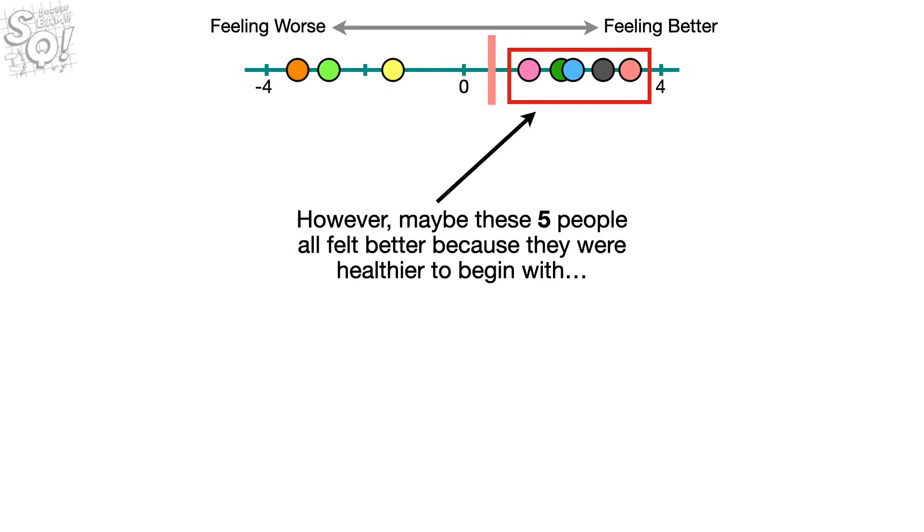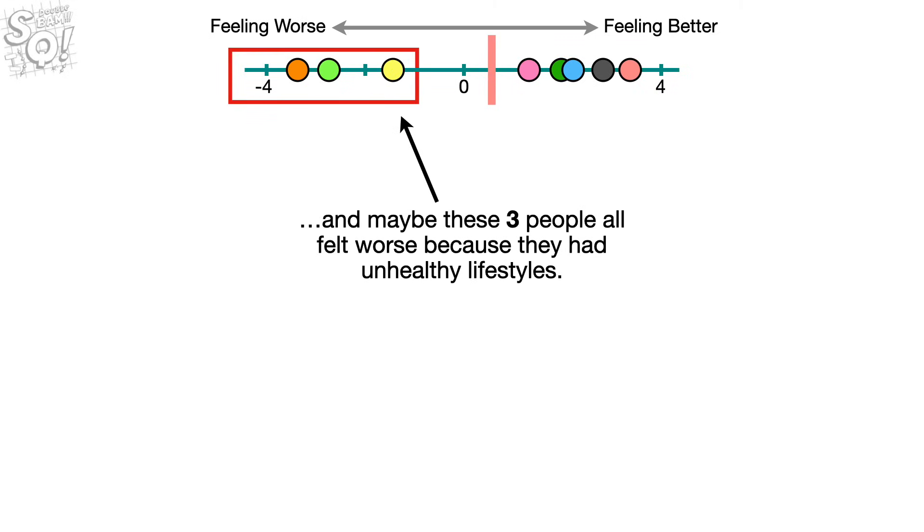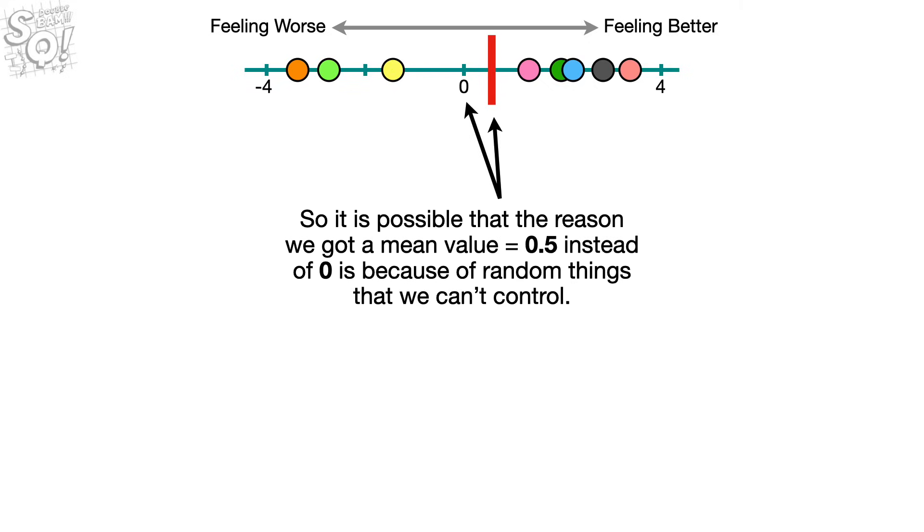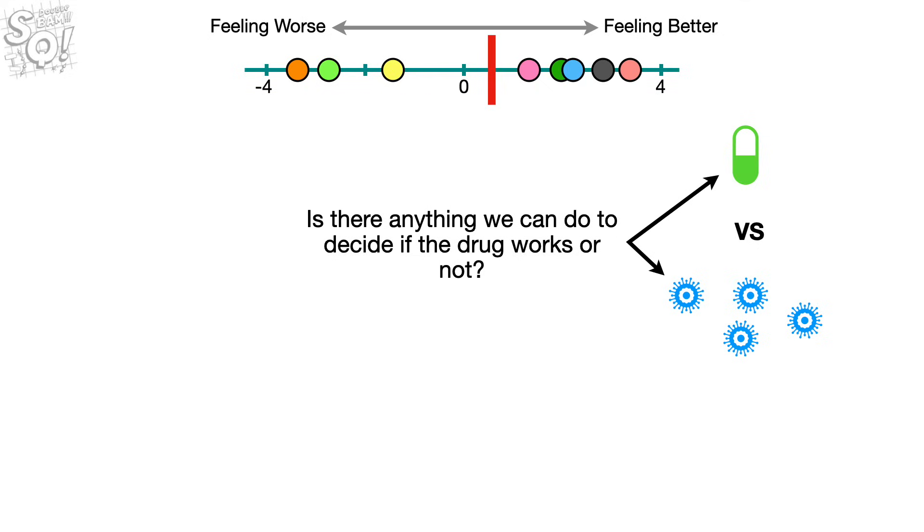However, maybe these five people all felt better because they were healthier to begin with. And maybe these three people all felt worse because they had unhealthy lifestyles. So it is possible that the reason we got a mean value equal to 0.5 instead of 0 is because of random things that we can't control. Is there anything we can do to decide if the drug works or not?